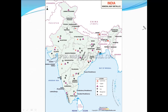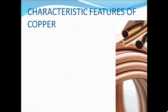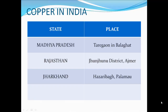This map of India shows metallic mineral availability. The third important metallic mineral is copper. Copper is highly ductile, a good conductor of electricity, and a good conductor of heat. It is used for making arms and ammunition, utensils, electrical machinery, railway equipment, stainless steel, and telephone parts. It is also alloyed to make brass and bronze. Occurrences of copper in India: Balaghat in Madhya Pradesh, Jhunjhunu district and Ajmer in Rajasthan, and Hazaribagh and Palamu in Jharkhand.